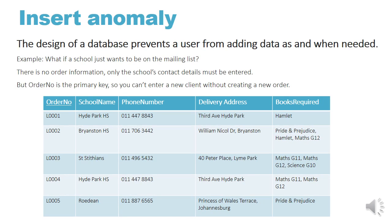An insert anomaly — the definition is: the design of a database prevents a user from adding data as and when needed. In our database, if a school just wants to get onto our mailing list so that we send them adverts, but they're not ready to place an order, they won't have an order number. This will prevent us from putting them onto the table, and that is an insert anomaly.